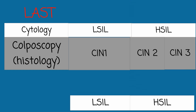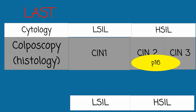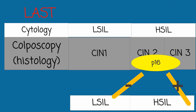Lesions previously classified as CIN 1 are now LSIL, and most CIN 3 is classified as HSIL. Specimens that were CIN 2 or unclear CIN 3 can now be tested with P16 immunostaining to improve diagnostic reproducibility. P16-negative specimens are classified as LSIL, and P16-positive specimens are classified as HSIL.